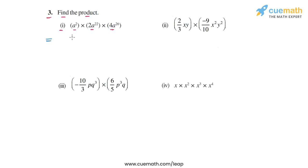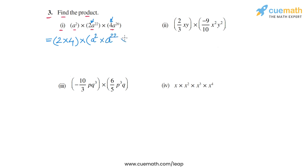The coefficient from the first term is 1, so we don't need to write it. In the second term it is 2, and in the third term it is 4. So the coefficient in the product will be 2 × 4. Then we take the product of the algebraic factors: a² from the first term, a²² from the second, and a²⁶ from the third. So 2 × 4 = 8.